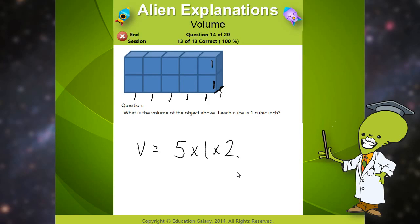So if I multiply these three numbers together, I should know the total volume in cubic inches of this rectangular prism.